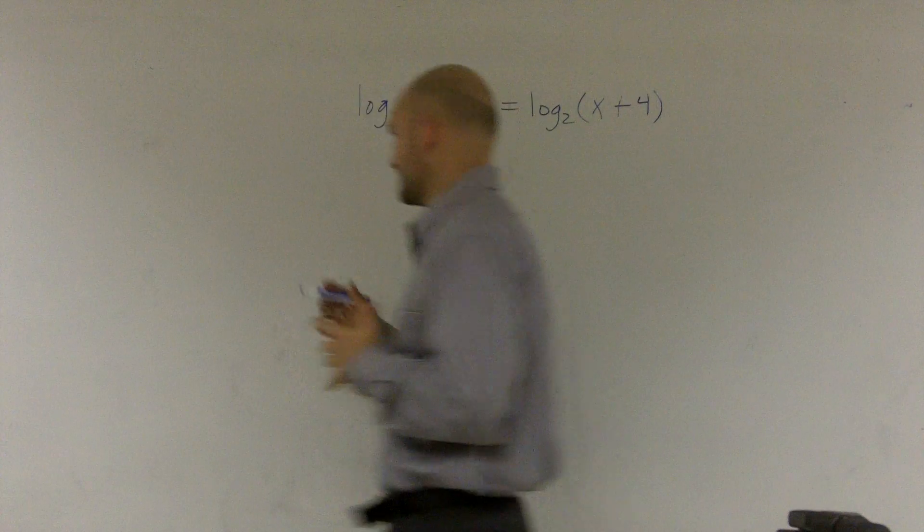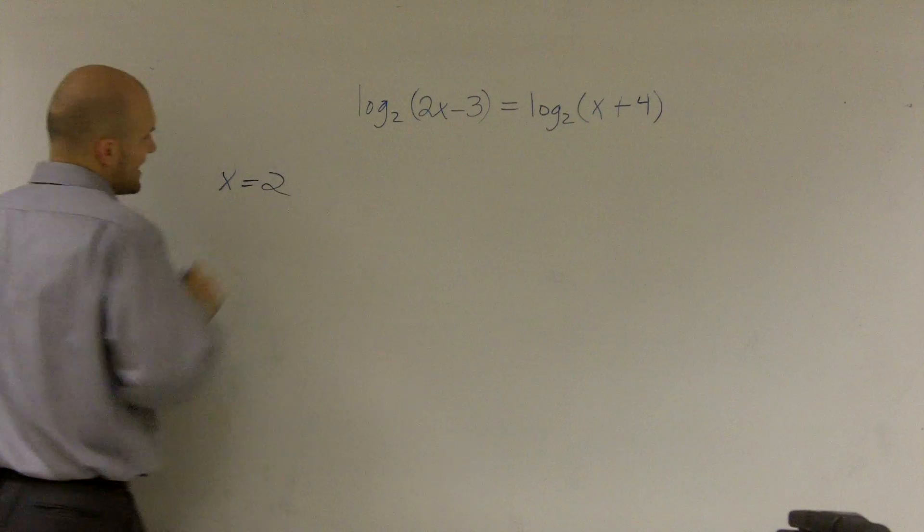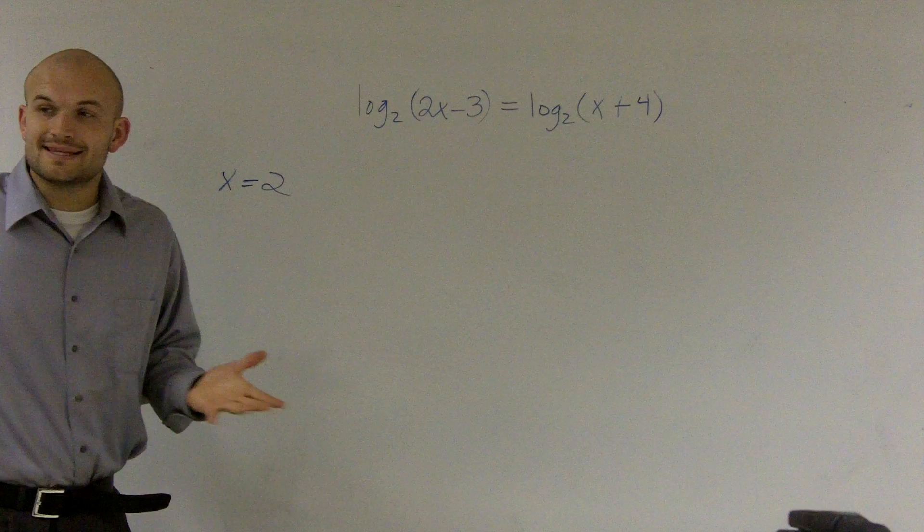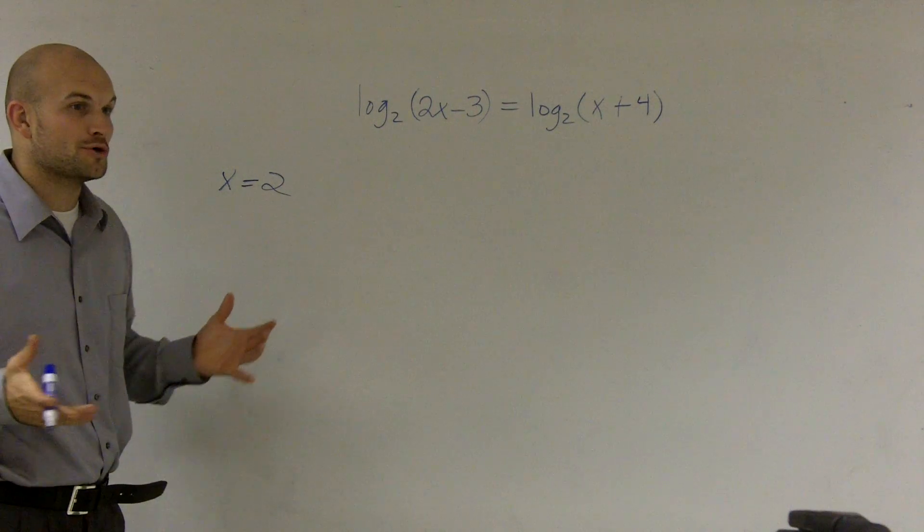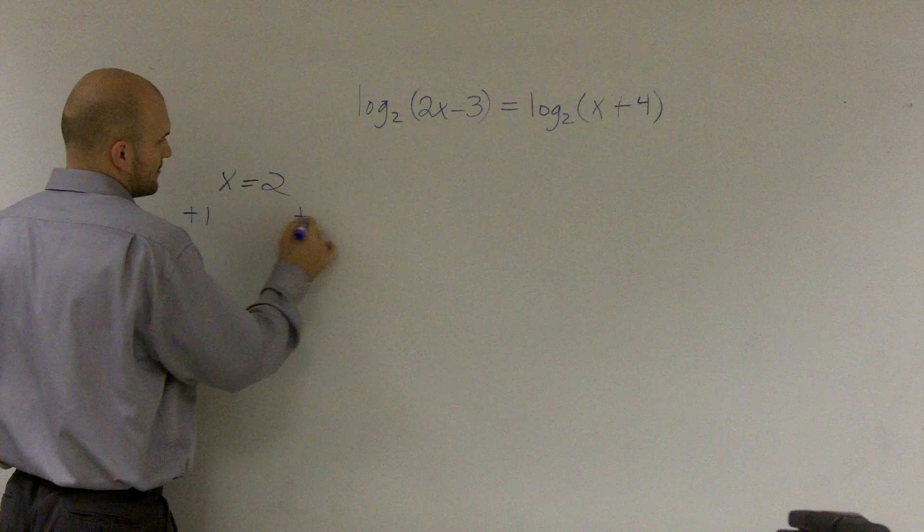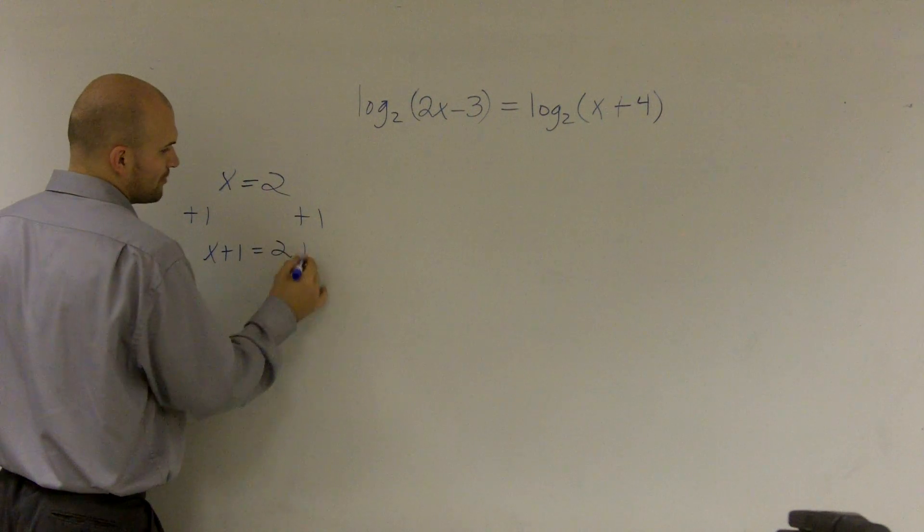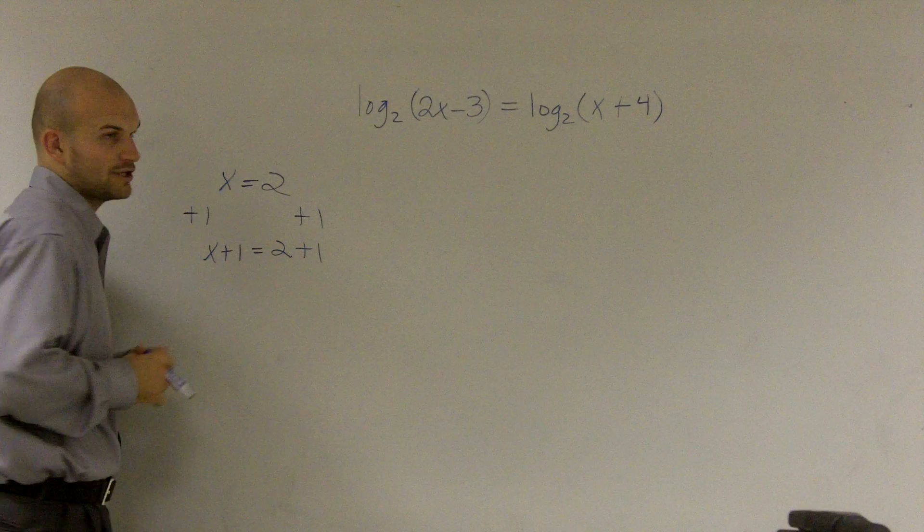So what the one-to-one property states is, let's say x equals 2. There's a lot of things that we can do to x equals 2 and still keep x equals 2. We can add a 1 on both sides. Therefore, x plus 1 is still equal to 2 plus 1, whereas x is still equal to 2.